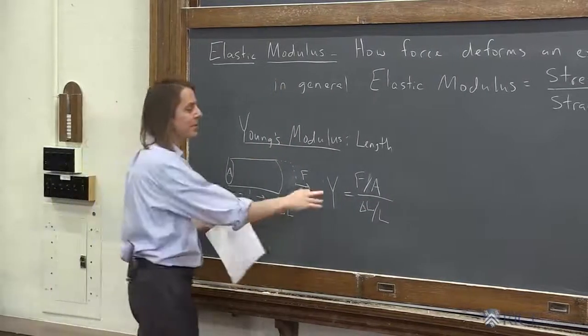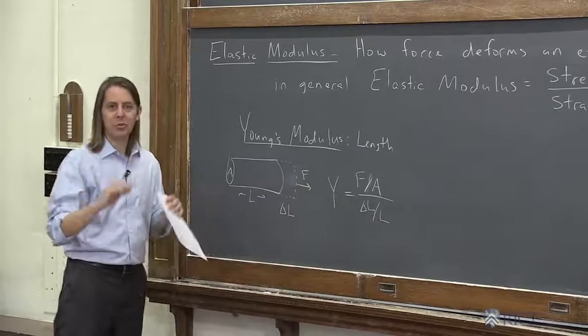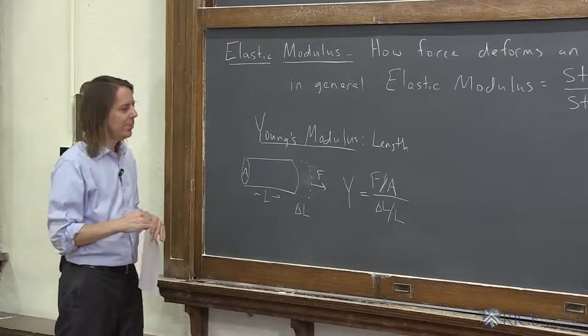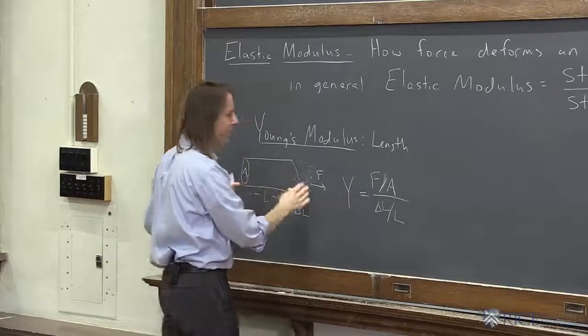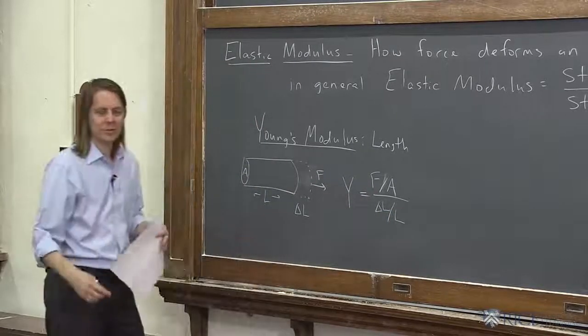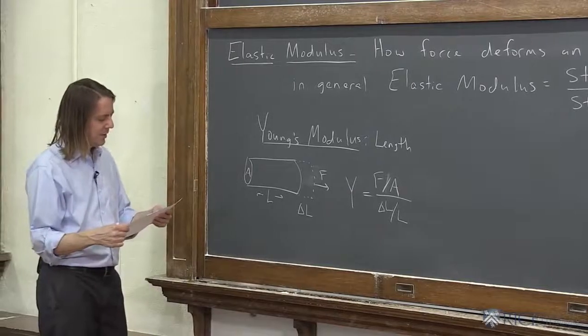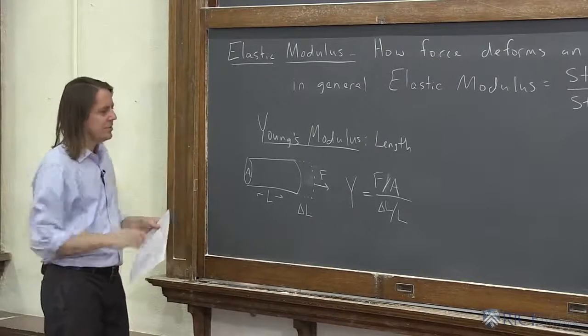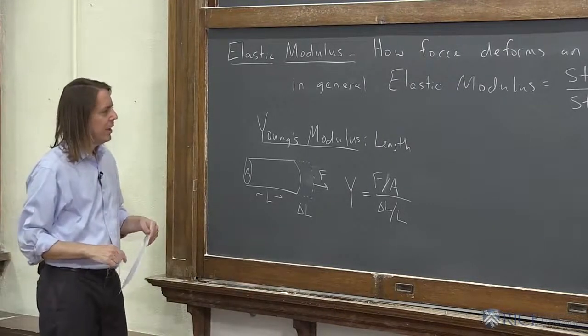So in the end, the unit of the modulus is a pressure, is Newton per meter squared. But it's not really a pressure, it's a description of how that pressure extends the object in a fractional sense, which is why meters don't show up in that sense. So we'll use some of these, and you'll see how this works. But that's for length.